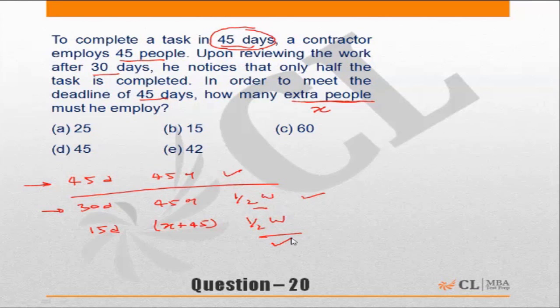The amount of work remains the same - there is no change in the amount of work. The number of days has become half. If the number of days has become half, that means the number of men should become twice. So instead of 45 men, now he will need 90 men, because the quantity of work has not changed. The quantity of work is still the same, 50 percent of the original work.